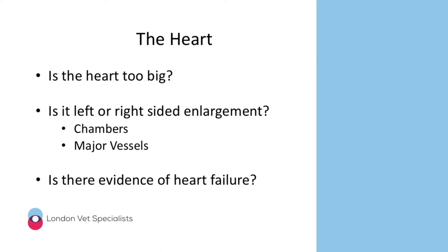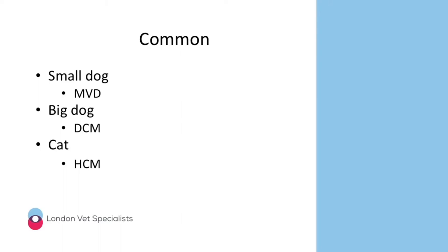Building on that knowledge, we're now going to talk about how specific heart diseases appear on thoracic radiographs. The most common types you're likely to encounter in first opinion practice are mitral valve disease, dilated cardiomyopathy, and hypertrophic cardiomyopathy.